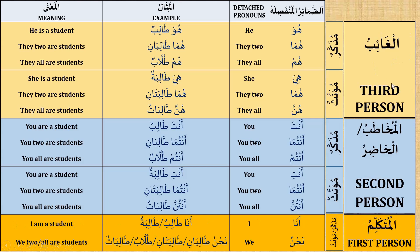These terms don't literally mean third person, second person, first person in the same way as English. In Arabic, al-ghaib means absent — the one who is not present with you. Al-mukhatab, or al-hadir, means the present one — the one who is present with you. Al-mutakallim means the speaker — the one who is speaking.